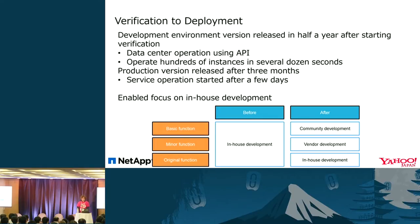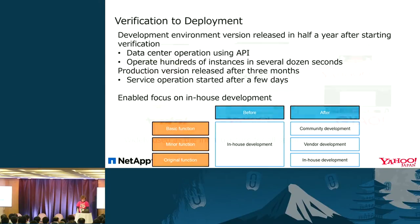The reason we could deploy so quickly is that we didn't have to prepare a unique API. In our traditional environment, we had to develop both basic and additional minor functionalities ourselves, including account integration. After OpenStack implementation, we could tap into basic functionality from the community, and for minor functionalities, we outsource development to vendors. The only thing we take care of ourselves is user-related functionalities for our private cloud.